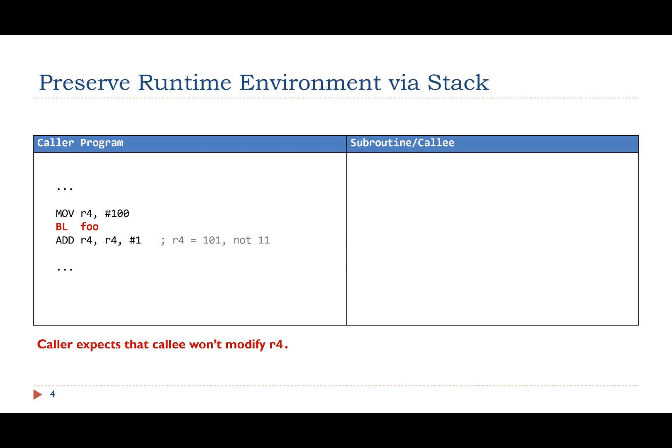Let's look at this example. In the caller program, suppose register R4 holds a value that will be used later after the subroutine call is completed. The caller program expects that the subroutine call does not modify R4. After the subroutine call is completed, R4 should still hold the value 100.